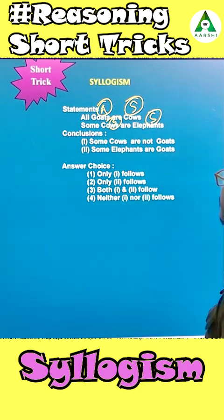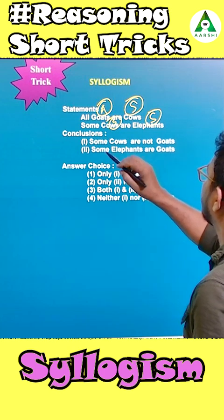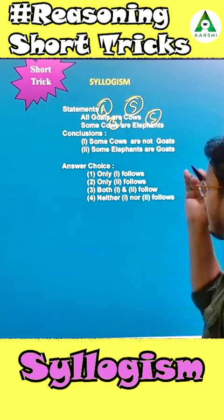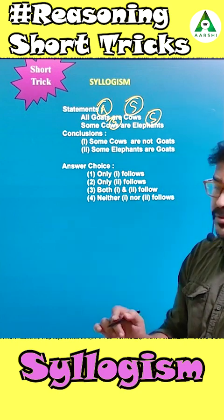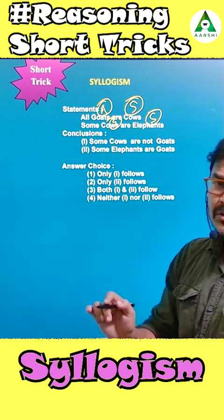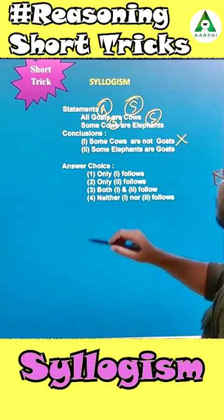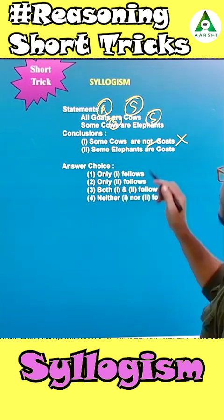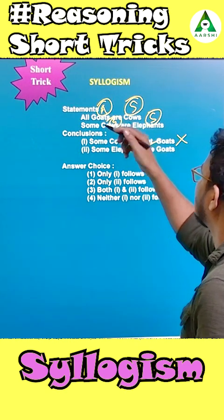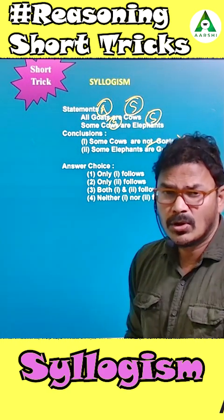Now go to the conclusion. What does the conclusion say? 'Some cows are not goats.' How can cows be goats? A single given statement — when the conclusion follows, we have an immediate conclusion. This rule: a positive statement gives a positive conclusion; a negative conclusion contains a negative word.